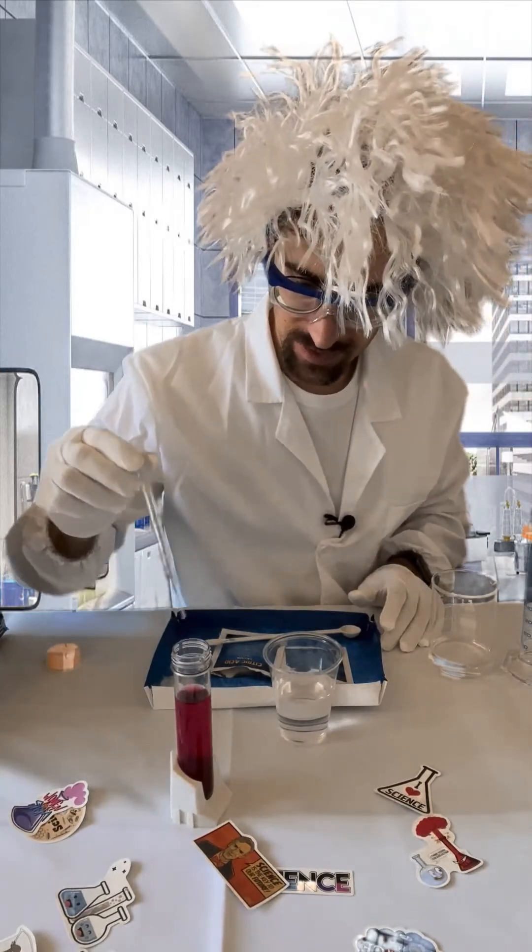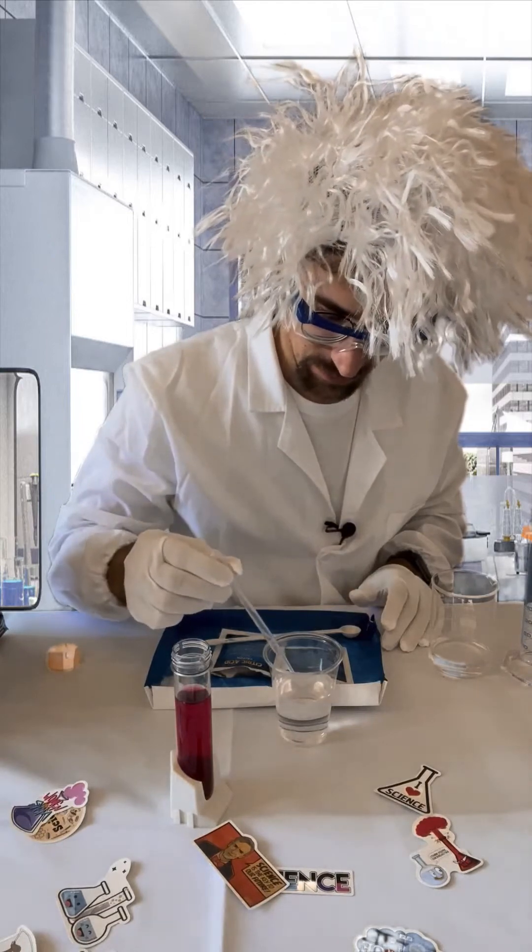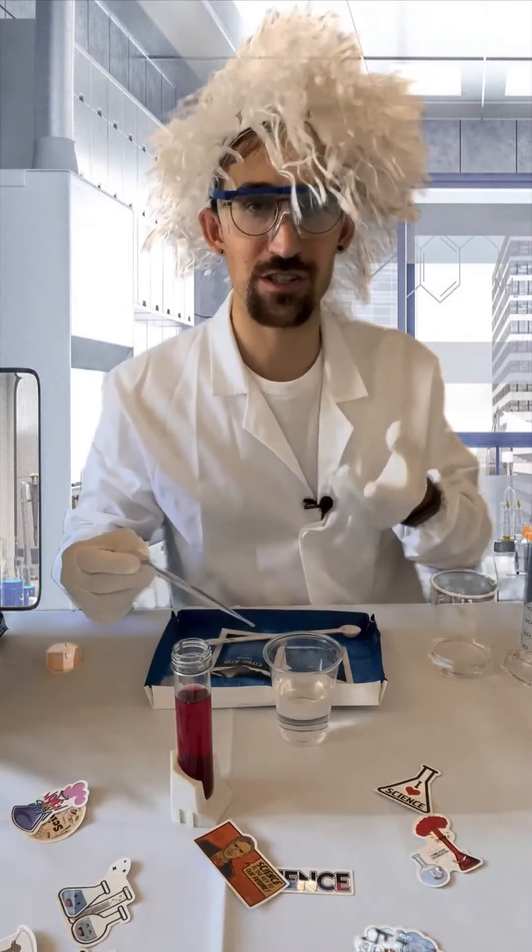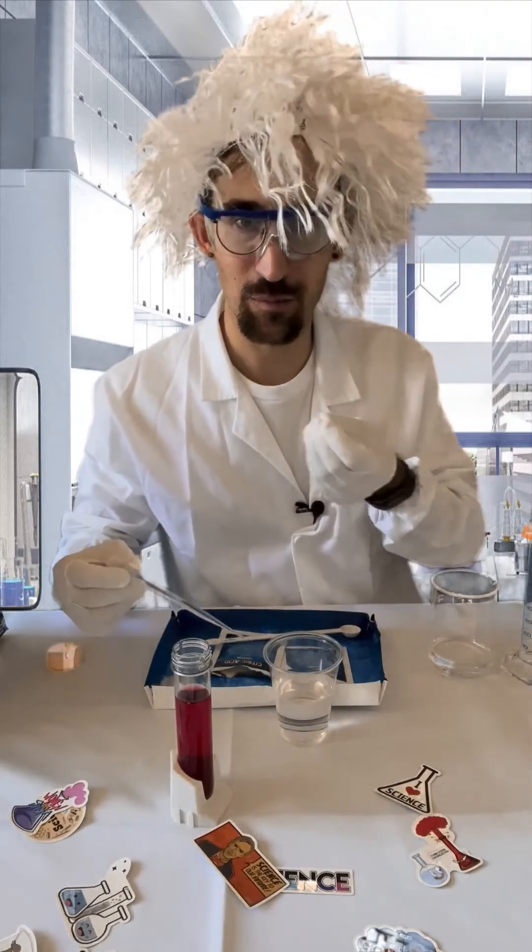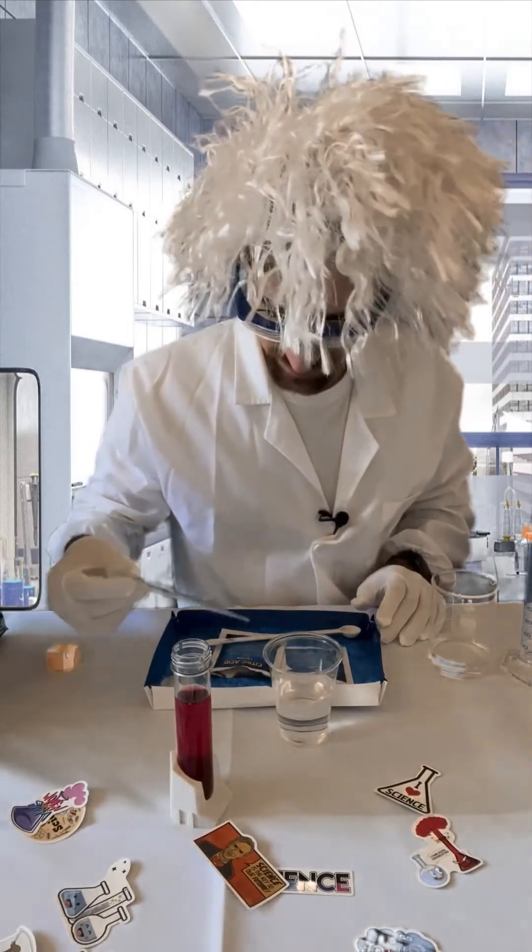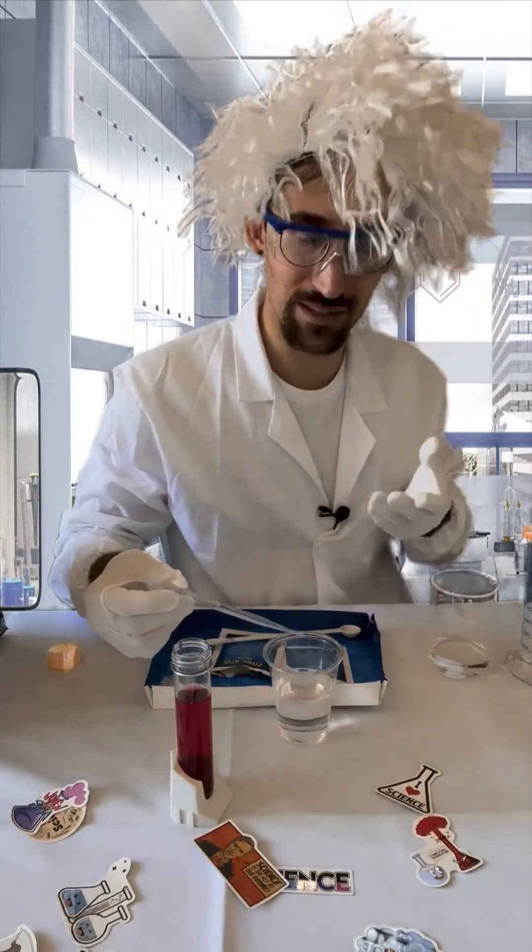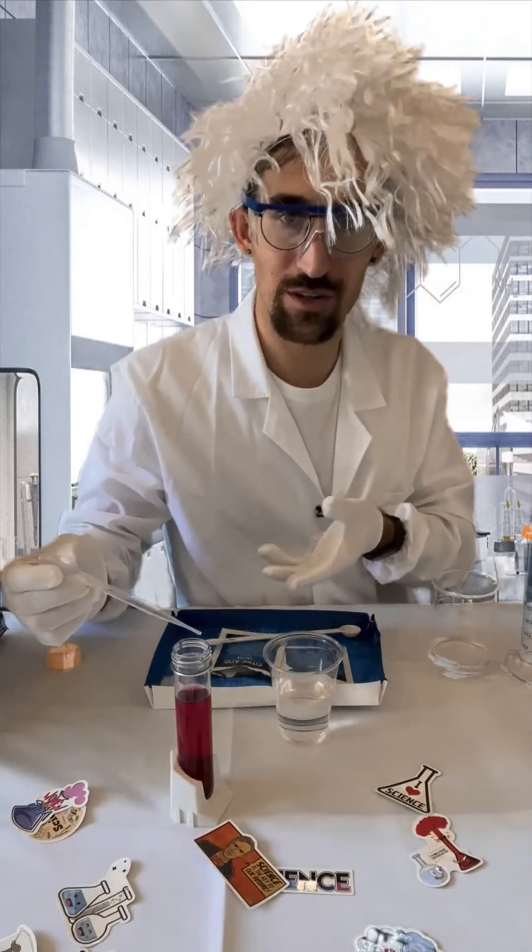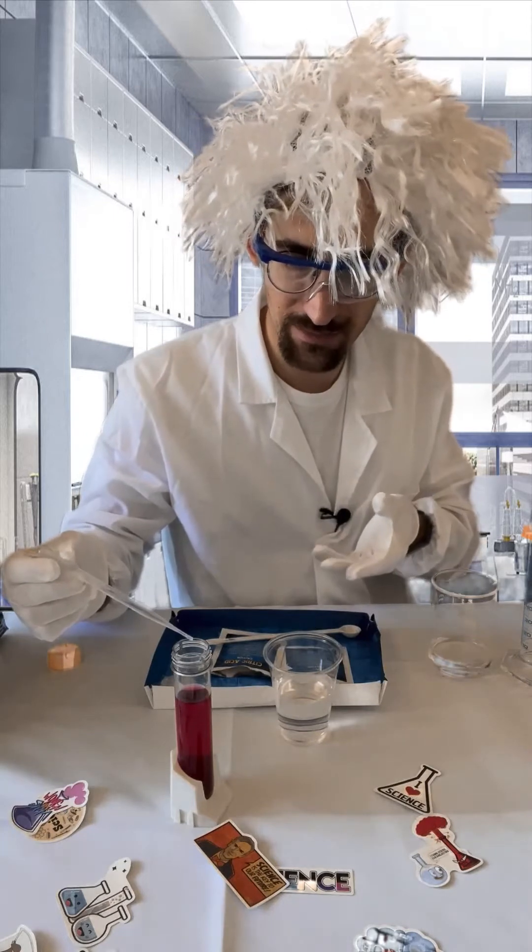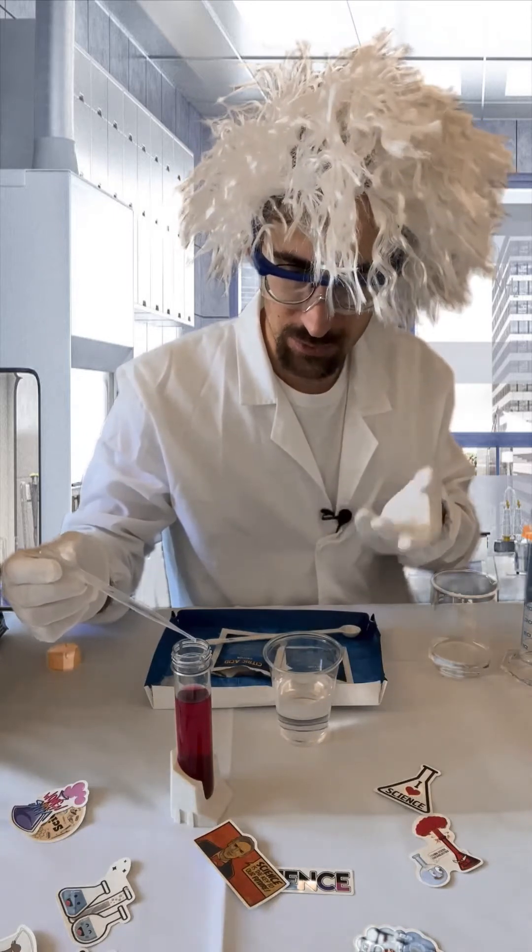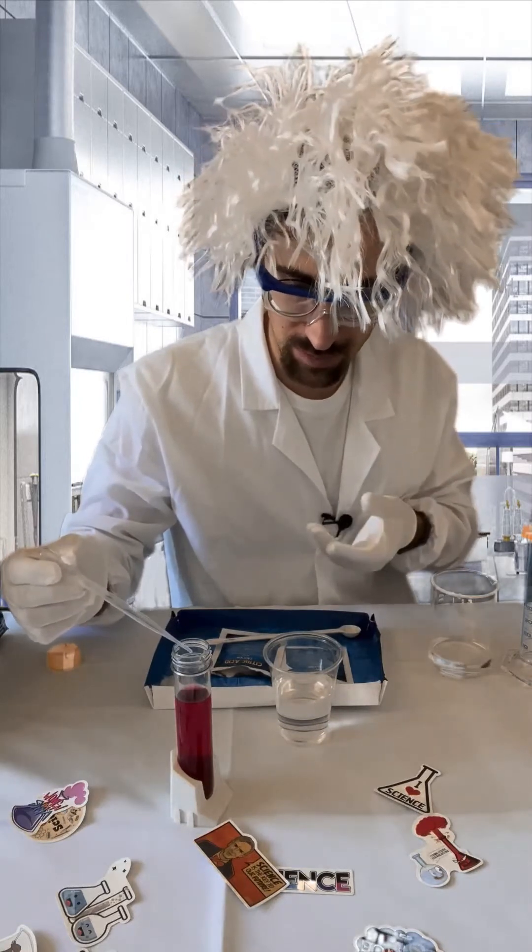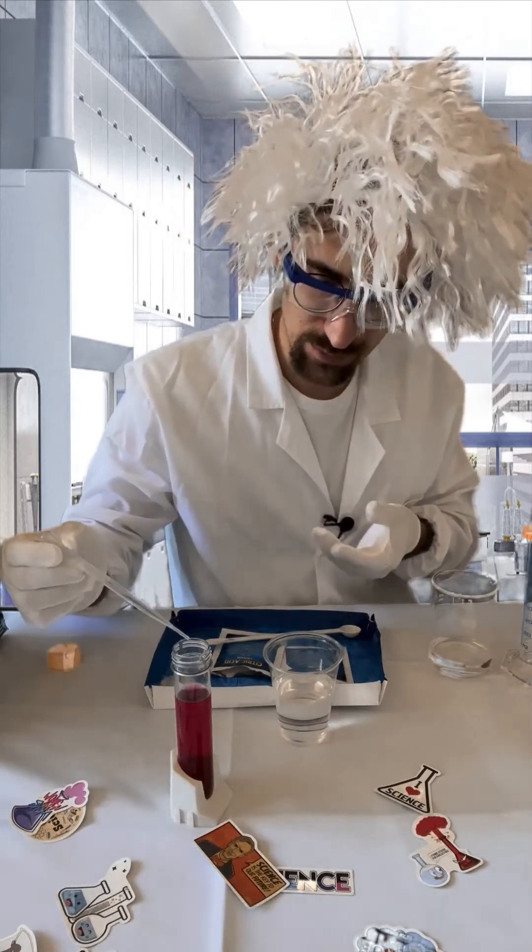Now what did we learn? We learned about acidity. We took our cabbage solution, which is an indicator, something that changes color based on how acidic or basic something is. We saw how when we took a citric acid solution, which is very acidic, and moved it into what was just water with cabbage powder, we transformed its acidity level to make it more acidic.